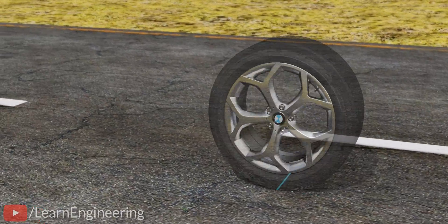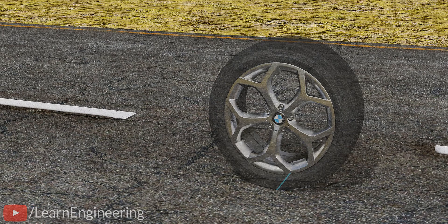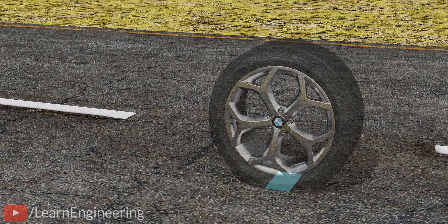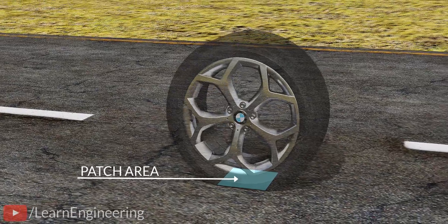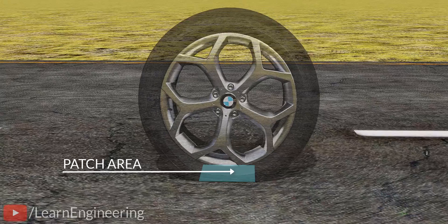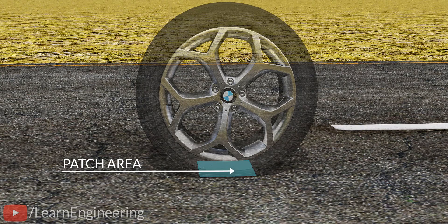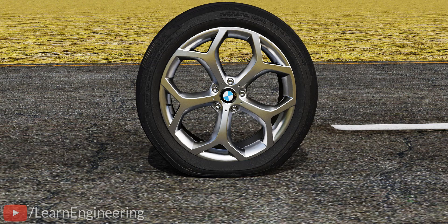However, in the real world, tires make contact with the ground not on a line but on an area. We call this a patch area. Especially the tires of cars, due to the huge weight acting on them, the tire's bottom region will get compressed. Please note that the tire compression shown here is exaggerated.